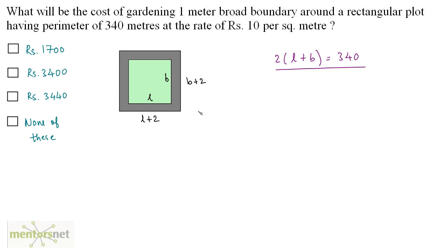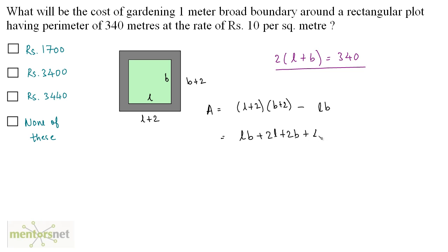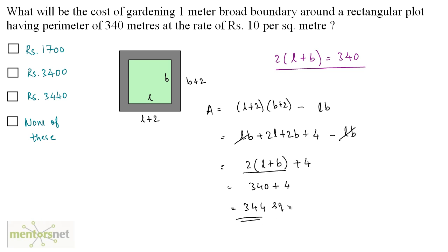The area of the inner rectangle is LB. The area of the outer rectangle is (L+2)(B+2). Expanding: LB plus 2L plus 2B plus 4 minus LB. The LB terms cancel out, leaving 2(L+B) plus 4. Taking 2 common gives twice of L plus B, which is 340, so 340 plus 4 equals 344 square meters.